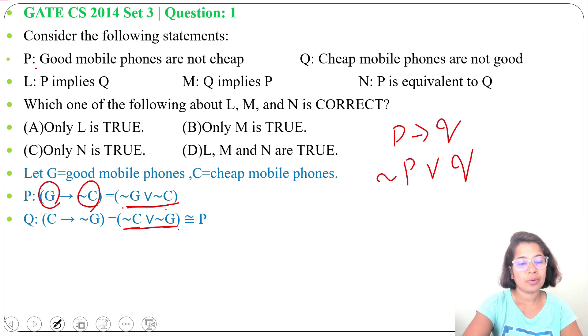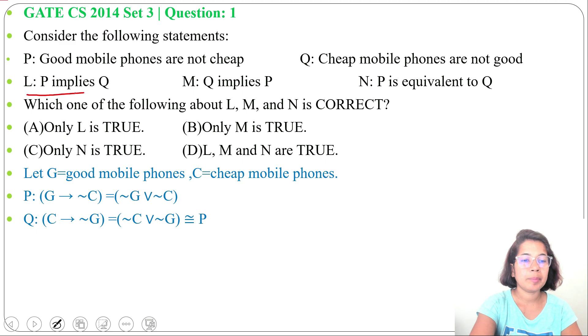So both are equivalent. We can write Q is logically equivalent to P as OR is commutative, so negation of G or negation of C is equal to negation of C or negation of G. Both are equivalent.